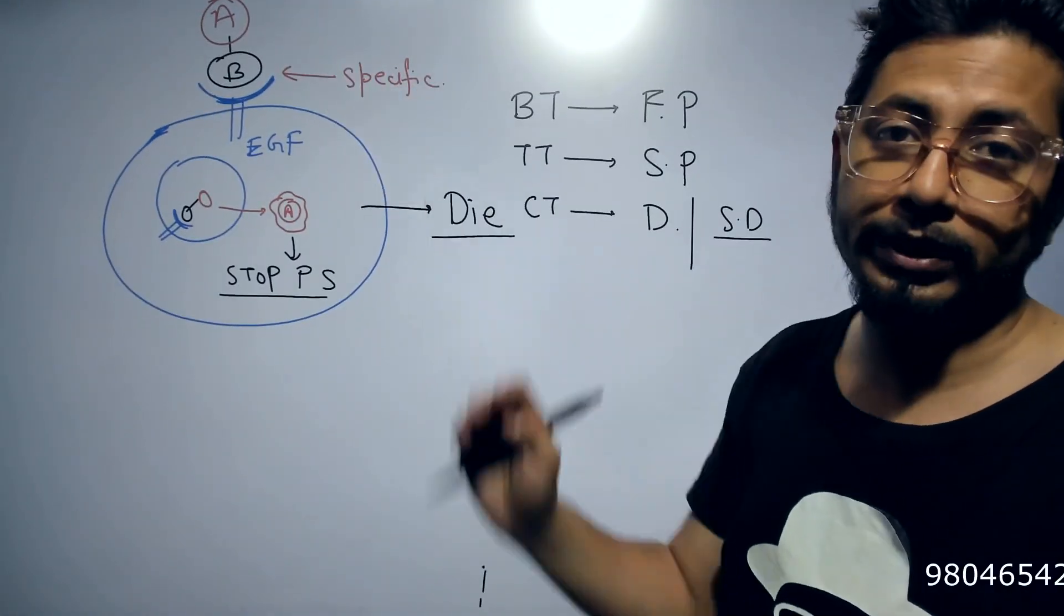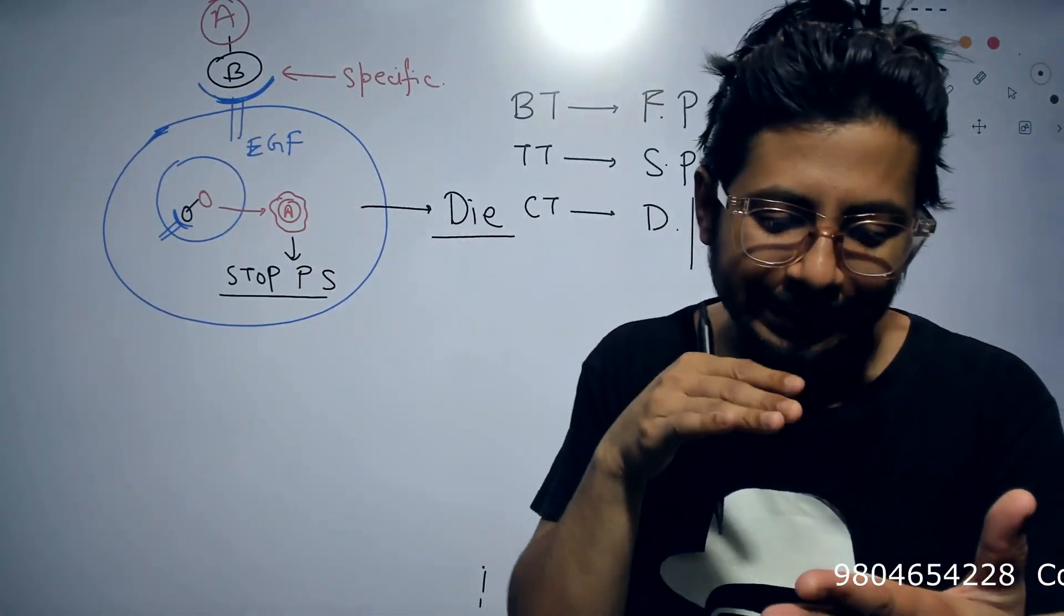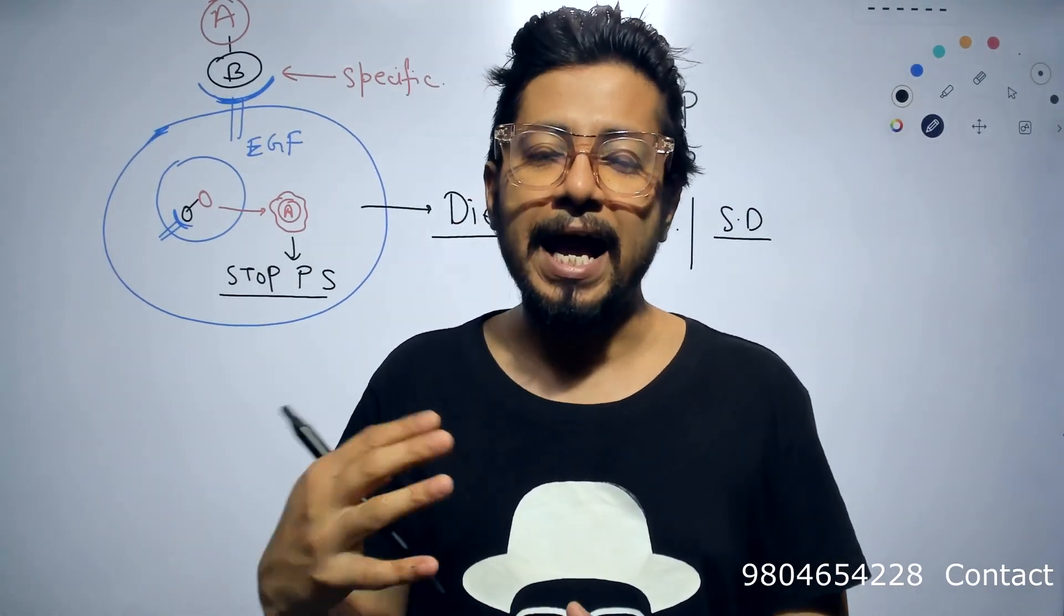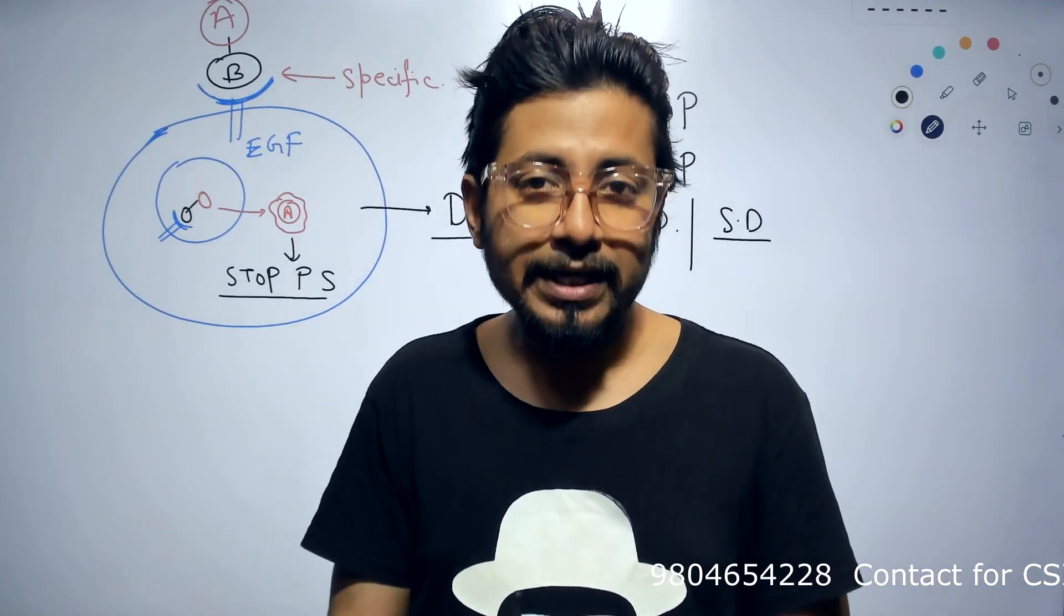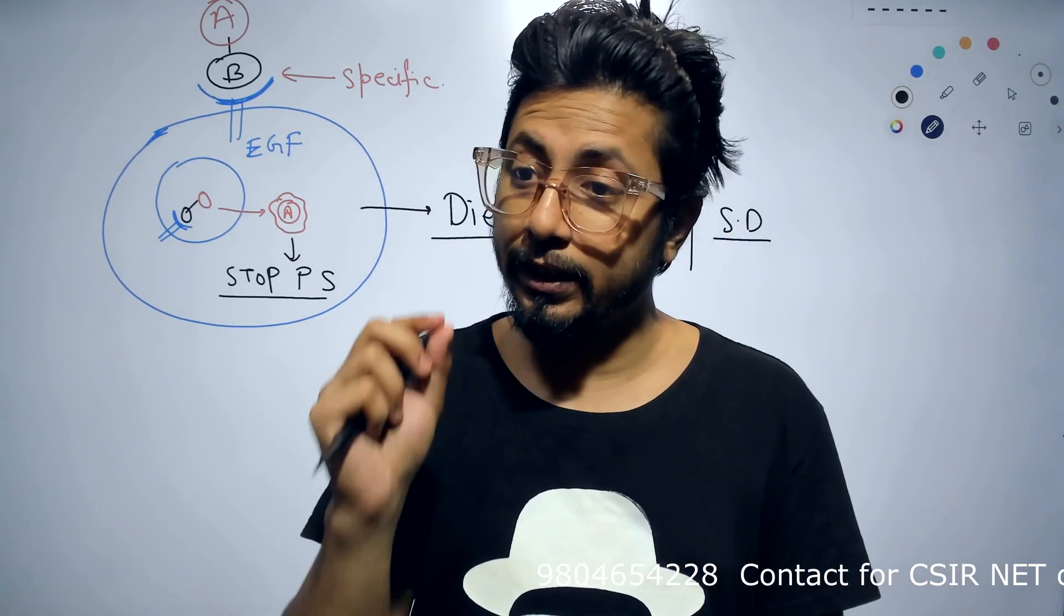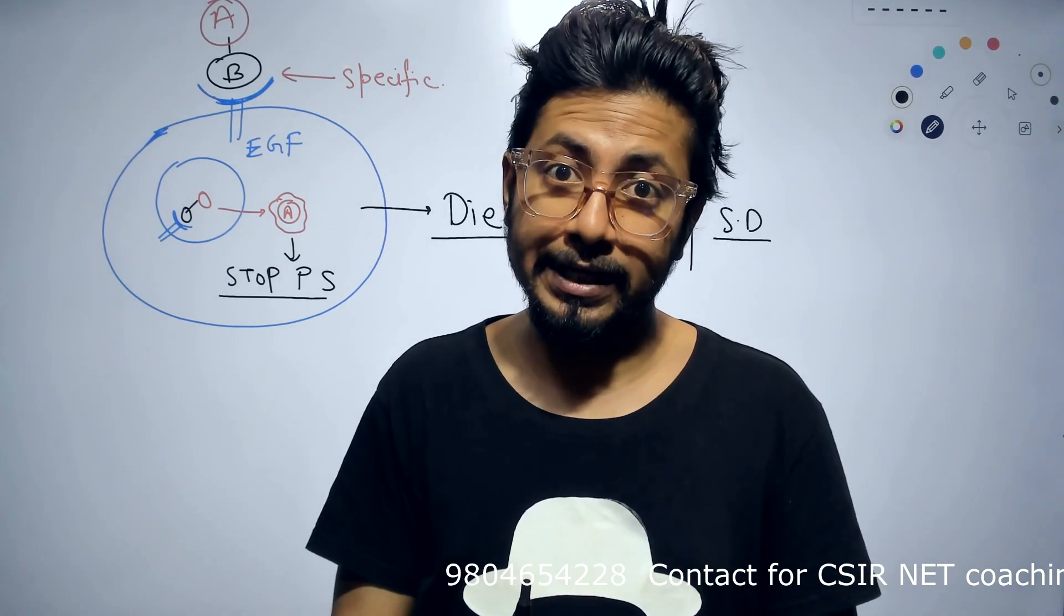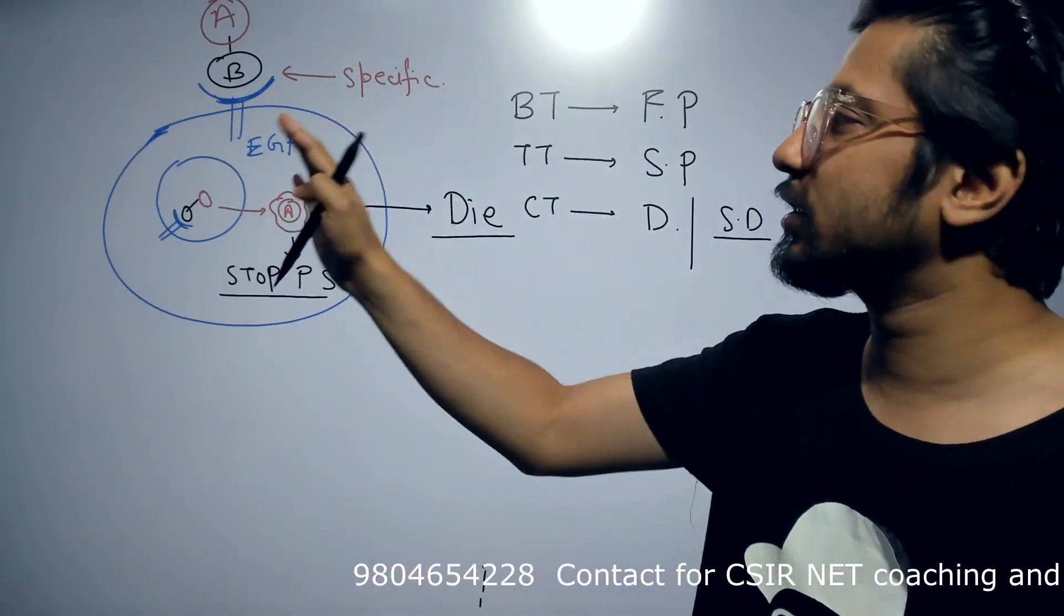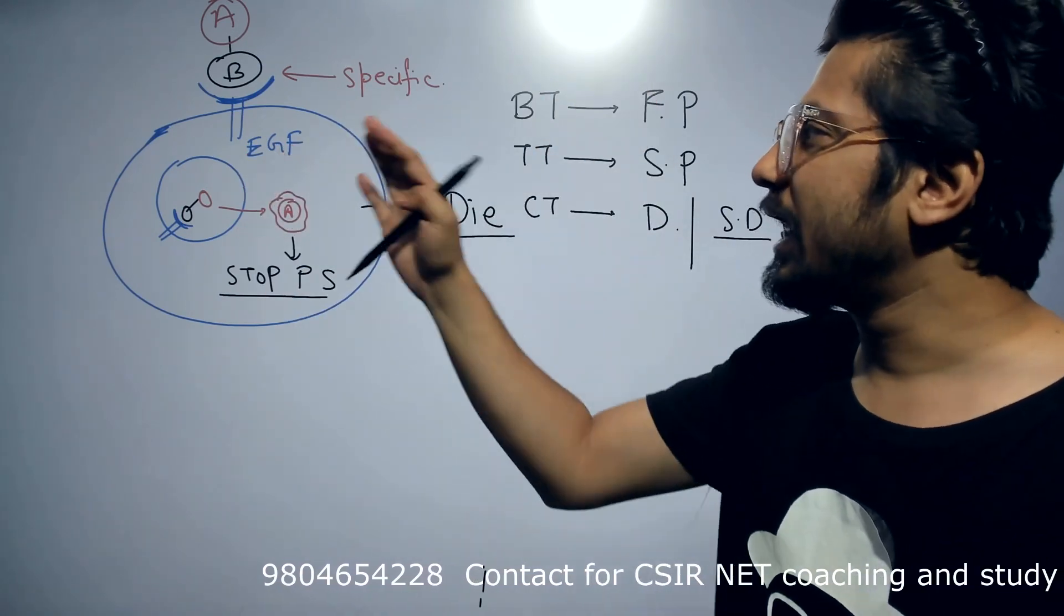As these toxins have two separate units, A and B, and we know B unit is very specific to bind to target cell receptors, we can modify this toxin and we can utilize only the B unit of this exotoxin in order to target any medicine or any protein particularly to our destined cell with the help of this mechanism. So modification is something that can be done with the bipartite nature of exotoxins, utilizing the bipartite nature of the exotoxins.